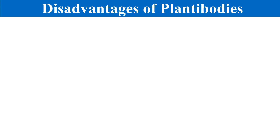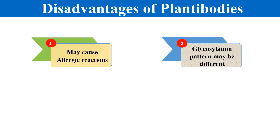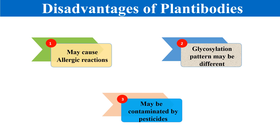Disadvantages of plantibodies include that they may cause allergic reactions — the antibodies formed inside the plant may cause certain allergic reactions. Additionally, the glycosylation pattern may be different from what is required. Glycosylation is a post-translational modification in which carbohydrates are attached to the protein, and in plantibodies the glycosylation pattern may sometimes differ, which is a disadvantage. Furthermore, plantibodies may be contaminated by pesticides, since we use many pesticides today, and these pesticides may contaminate the antibodies produced in the plant.